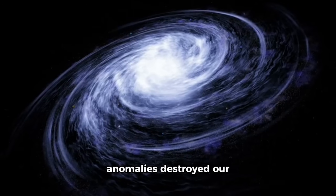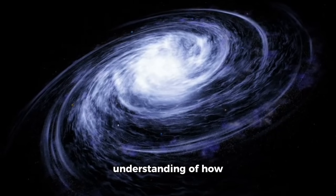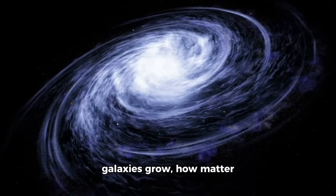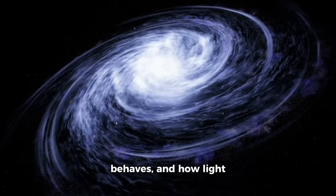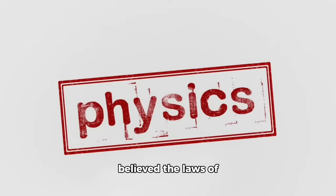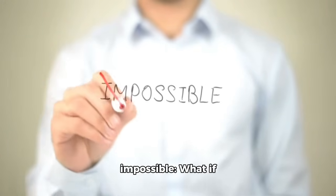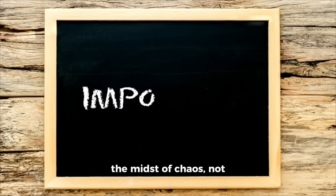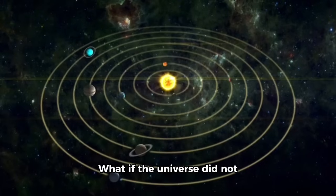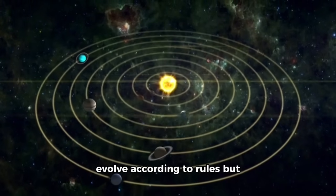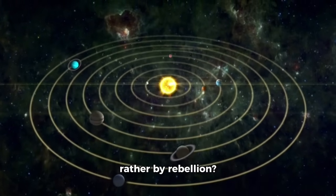These black hole-powered anomalies destroyed our understanding of how galaxies grow, how matter behaves, and how light travels through the fog of creation. For decades, we believed the laws of physics were universal, fixed, immutable. But now we must ask the impossible: what if those rules were made in the midst of chaos, not in tranquility? What if the universe did not evolve according to rules, but rather by rebellion?